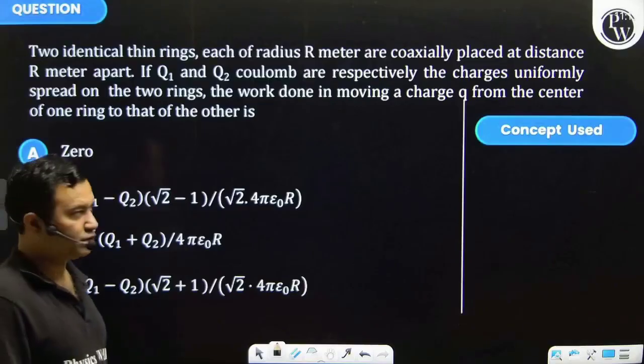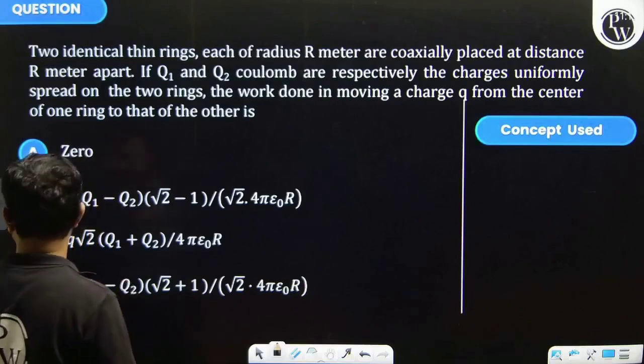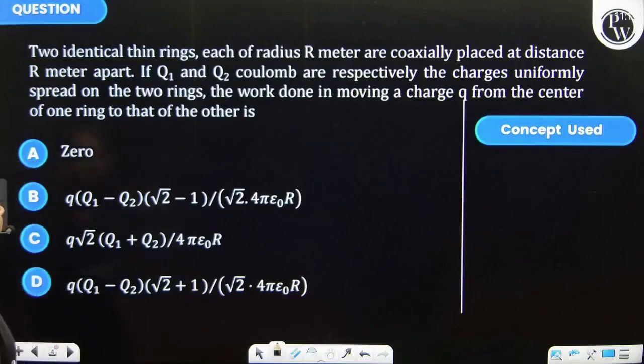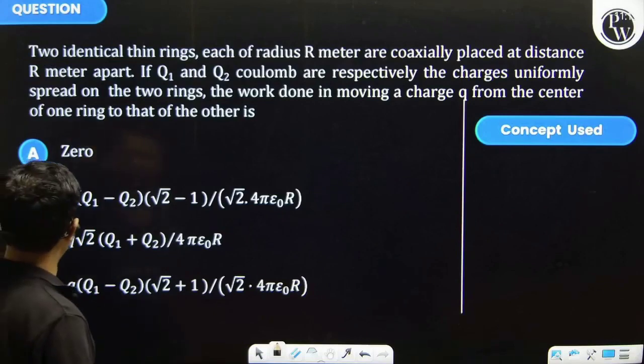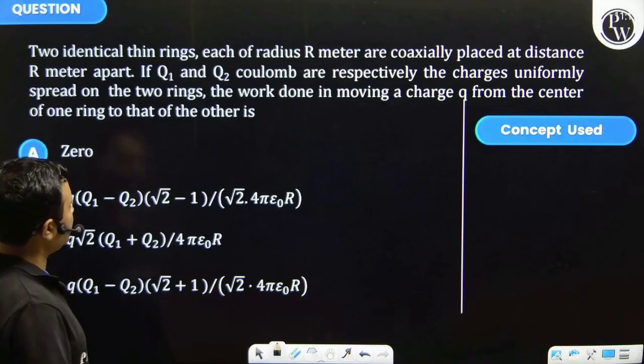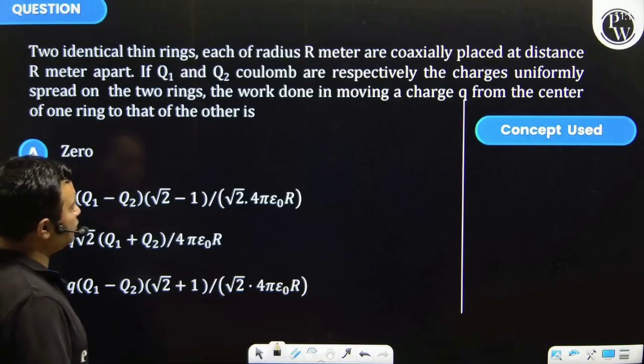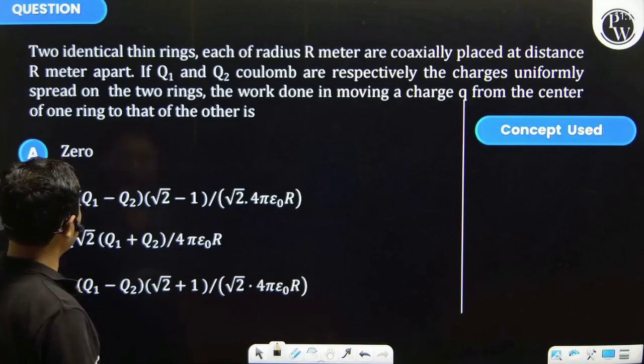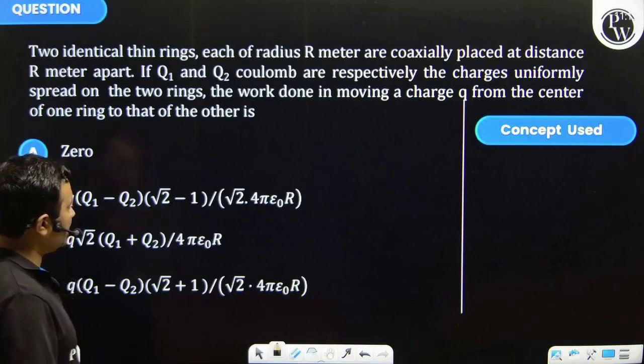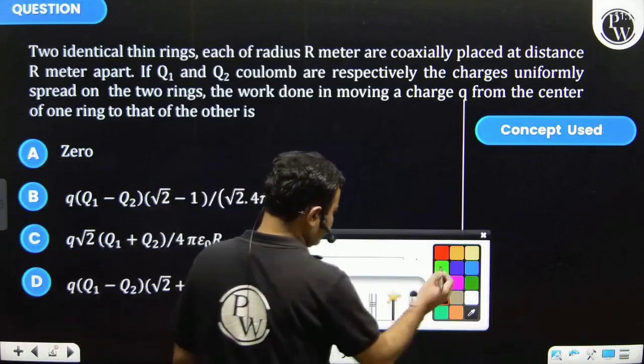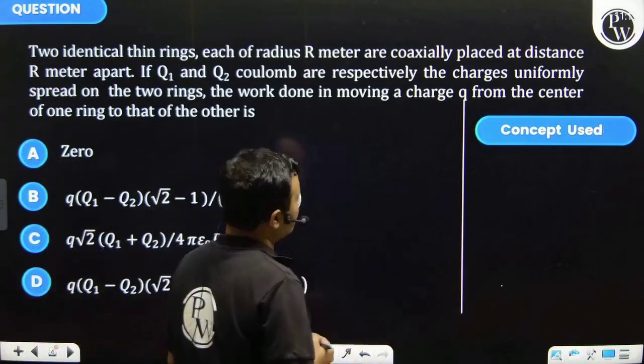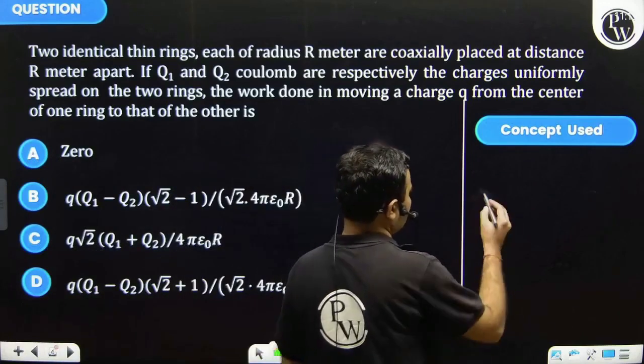Students, let's see this question: two identical thin rings each of radius R meter are coaxially placed at distance R meter apart. If Q1 and Q2 coulomb are respectively the charges uniformly spread on the two rings, the work done in moving a charge q from the center of one ring to that of other is. So the concept used is potential due to a charged ring.